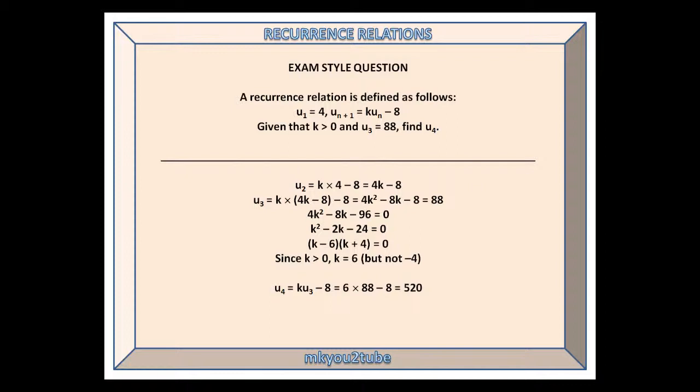Generate the second term by substituting 4 into the rule. This gives us 4k minus 8. Generate the third term by substituting 4k minus 8 into the rule. This gives us 4k² minus 8k minus 8, which we then put equal to 88. Make the quadratic equation equal 0, and divide by 4 to get the fairly basic k² minus 2k minus 24 equals 0.